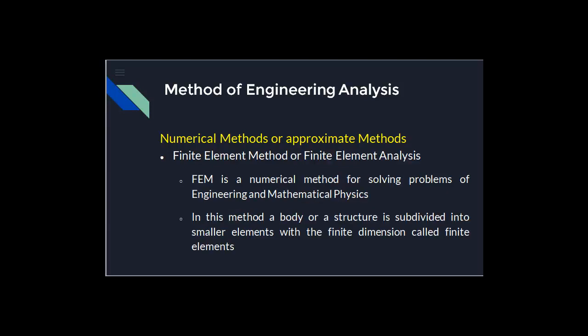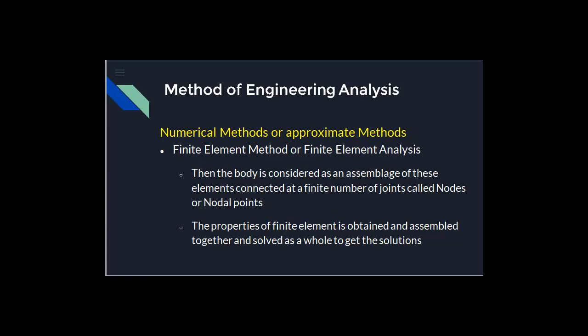The final numerical method is the finite element method or finite element analysis. It is a numerical method for solving problems of engineering and mathematical physics. In this method, a body or structure is subdivided into a finite number of smaller elements with finite dimensions, called finite elements. This body is then considered as an assemblage of these smaller elements connected by means of joints or nodes.